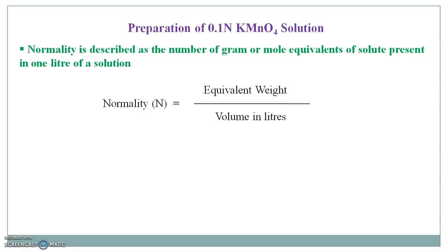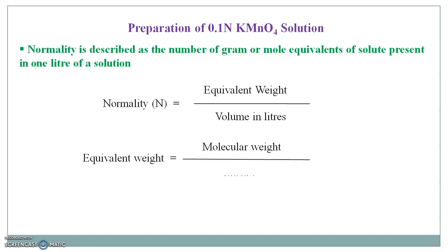Now, you must know how to calculate equivalent weight. Equivalent weight is the ratio of molecular weight by valency. Valency is the number of H+ or OH- ions involved in the reaction. But in this case, as potassium permanganate is a strong oxidizing agent, there is no involvement of H+ or OH- ions in the reaction.